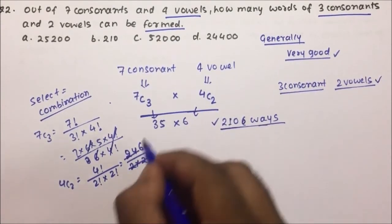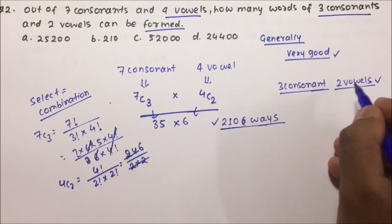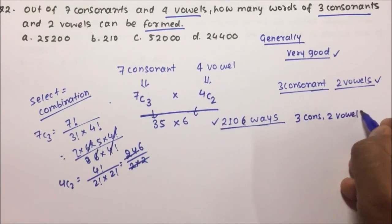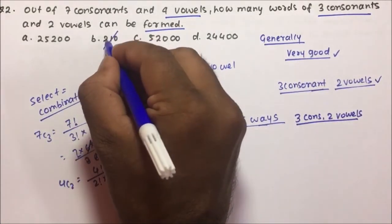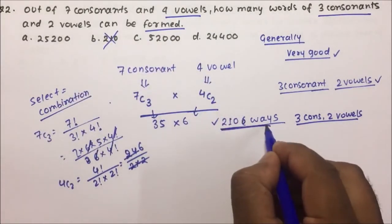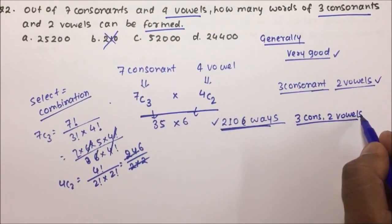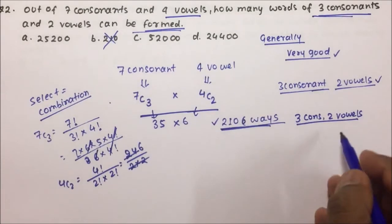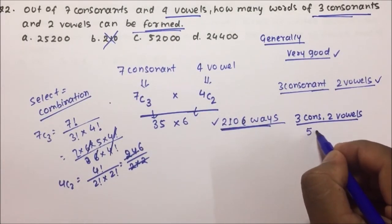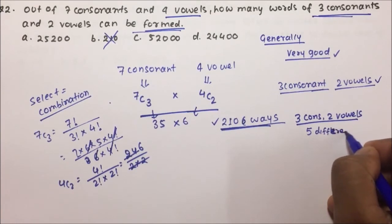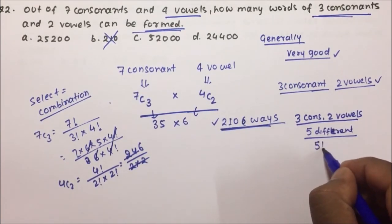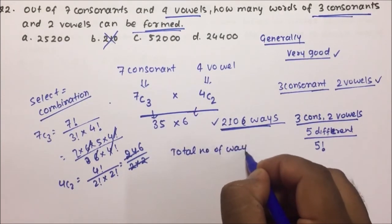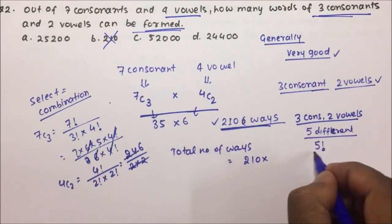Now I have 3 consonants and 2 vowels selected. Do not mark the answer as 210 — that would be wrong. There are 210 ways to select 3 consonants and 2 vowels, but now we have to arrange them. Permutation means arrangement. We have 5 different letters, and 5 different letters can be arranged in 5 factorial ways. So the total number of ways = 210 × 5!.